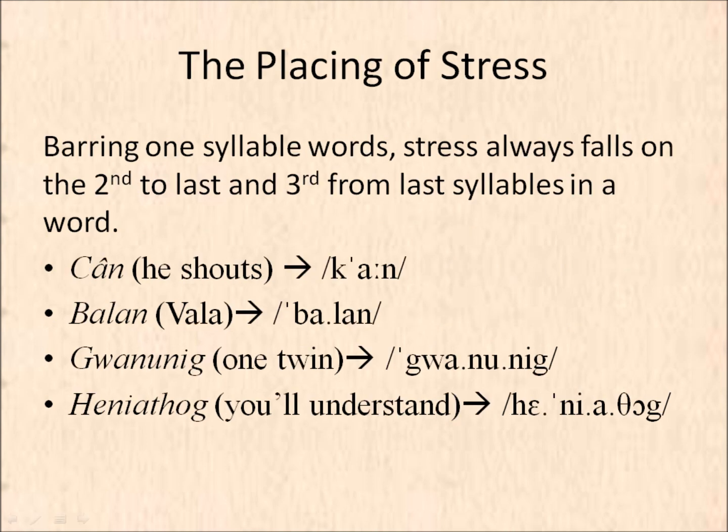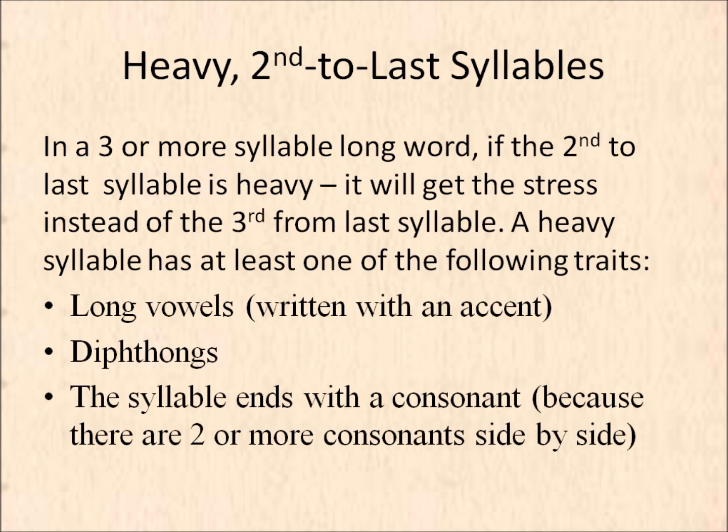The placing of stress. Barring one-syllable words, stress will always fall on the second-to-last or third-to-last syllable in a word. In the word Kan, that one syllable gets the stress. In the word Balan, the first syllable gets the stress. In three-syllable words like Guanunig, the first syllable gets the stress. But in a four-syllable word, the syllable third from the end gets the stress — like in Heniapol. In a three-or-more-syllable word, if the second-to-last syllable is heavy, it will get the stress instead of the third from last.